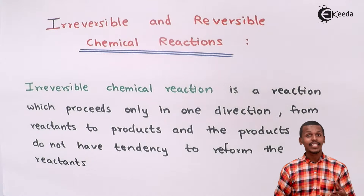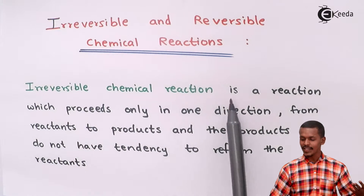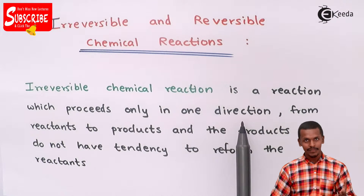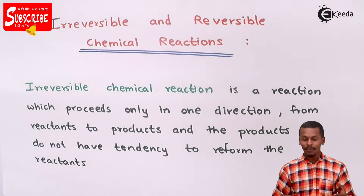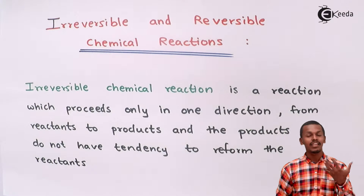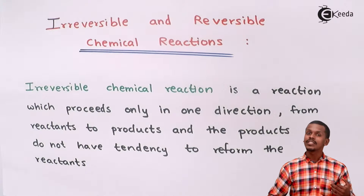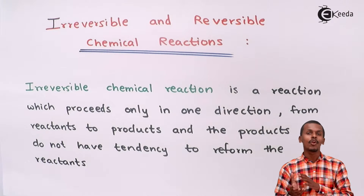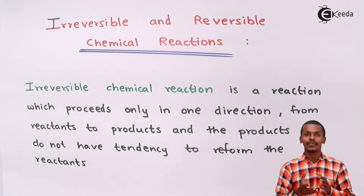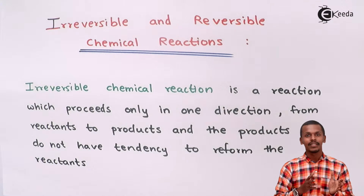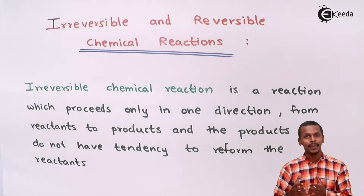Let us understand what is actually an irreversible reaction. An irreversible chemical reaction is a reaction which proceeds only in one direction, from reactant to product, and the product does not have the tendency to reform the reactants. That means once the reactant has been converted into product, the product will not form back into the reactant. This kind of reaction is basically unidirectional, and that is the reason we cannot get the reactant back — the forward reaction is favored over the backward reaction.